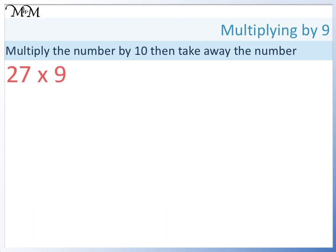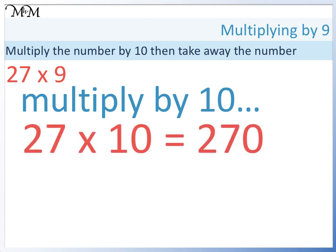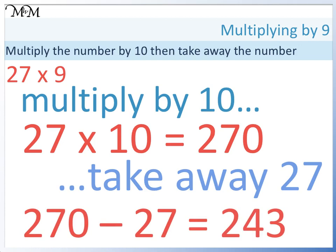Here's another example: 27 times 9. We will multiply 27 by 10. 27 times 10 equals 270. This has given us 10 lots of 27. We only want 9, so we need to take away 1 lot of 27. 270 take away 27 equals 243.